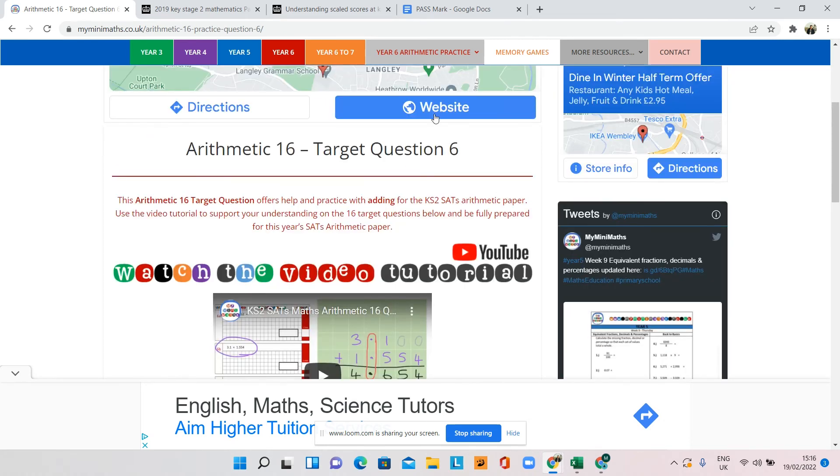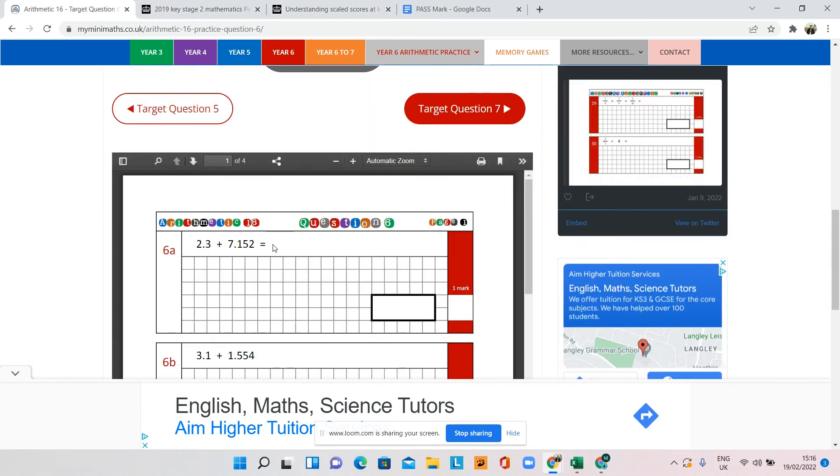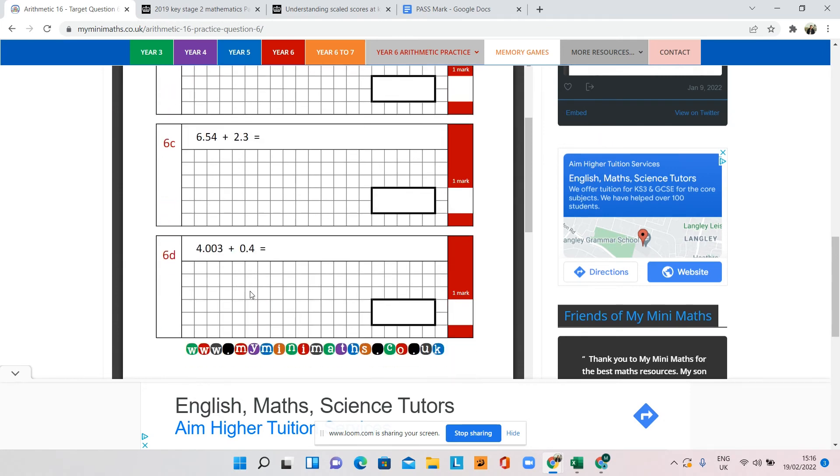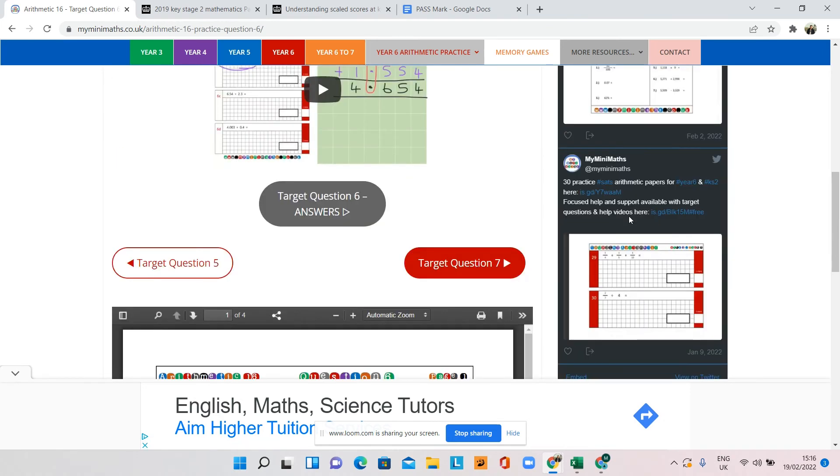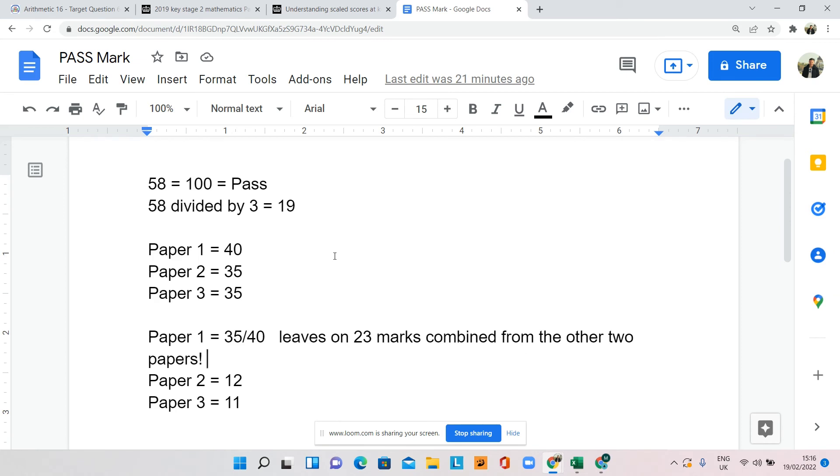They have the same for each question on the arithmetic paper. Just go back to this bar here, arithmetic 16 target questions. So, I will probably be looking to do more videos on the arithmetic paper if you would like help with specific kinds of questions, but that's a good website to use, but also some good information for you guys to know and understand is that if your child can score really high on that arithmetic paper, it gives them a great chance to pass the SATs overall.